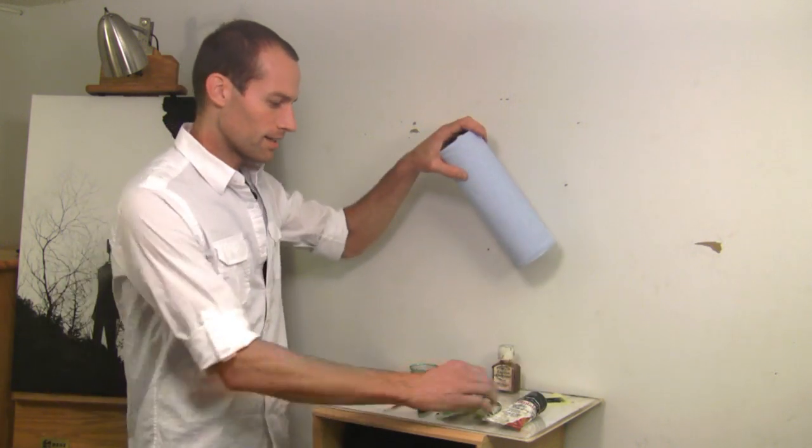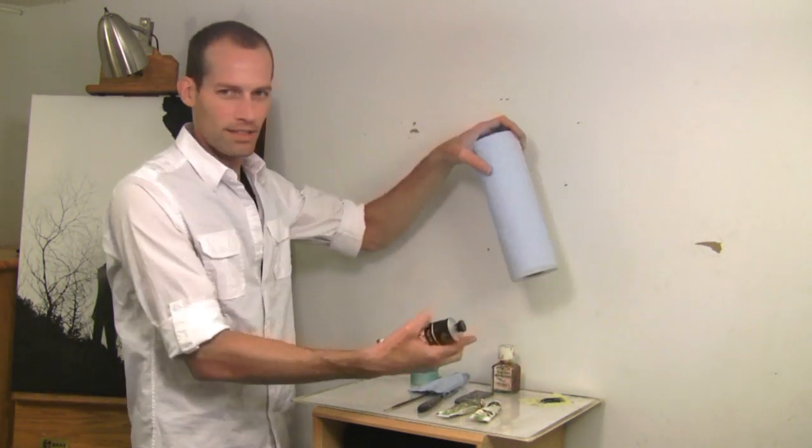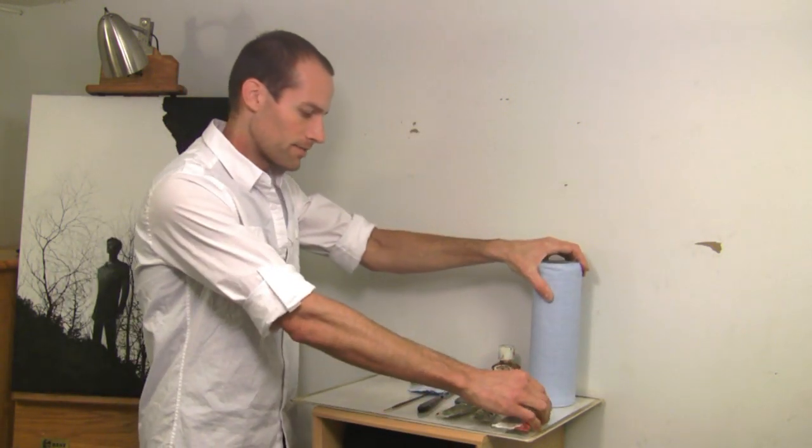And the oil paint takes a long time to dry, so if you mix up too much you don't use it all, you can always cover it up with a piece of plastic like I've done here and use it later. It doesn't dry out very fast at all.